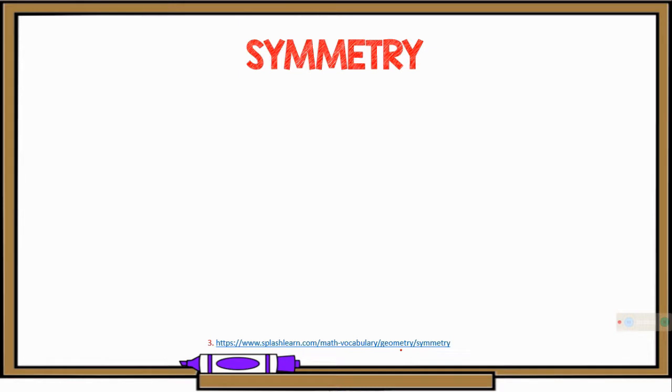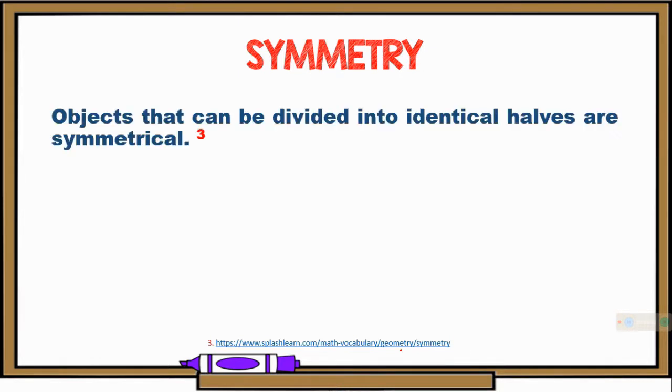Let's start with symmetry. Objects that can be divided into identical halves are symmetrical. Let's look at the following examples.